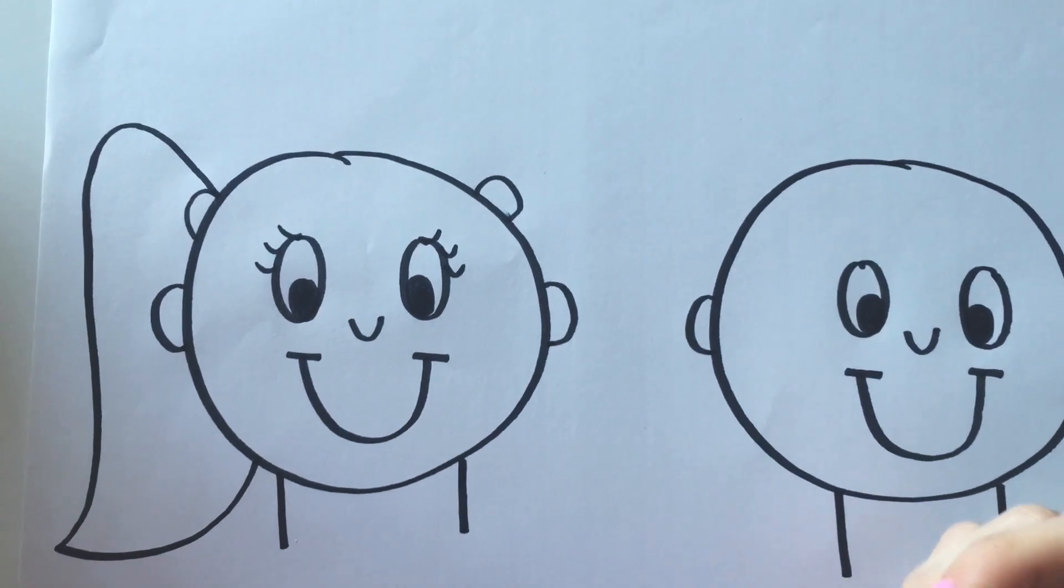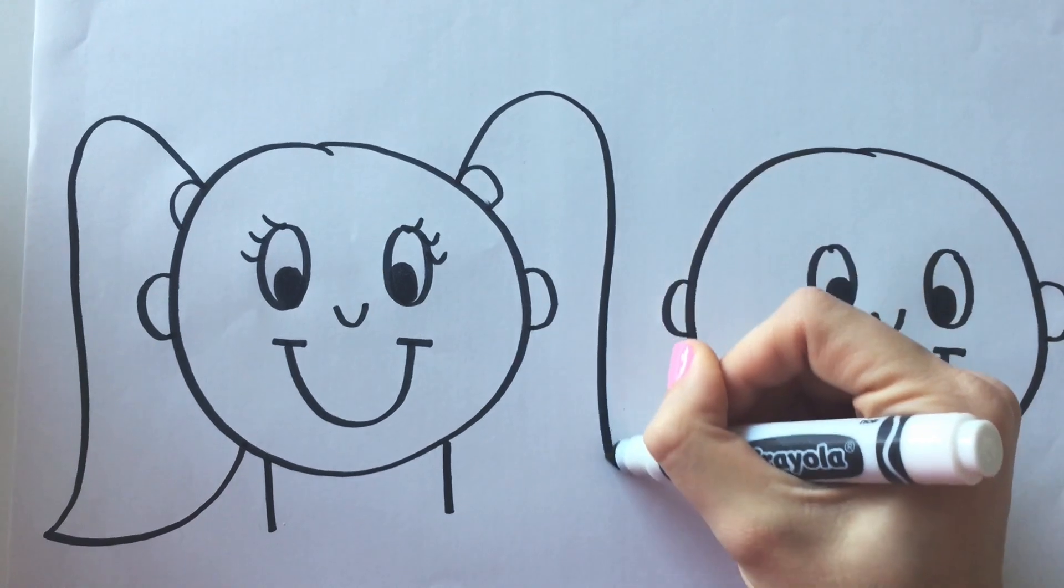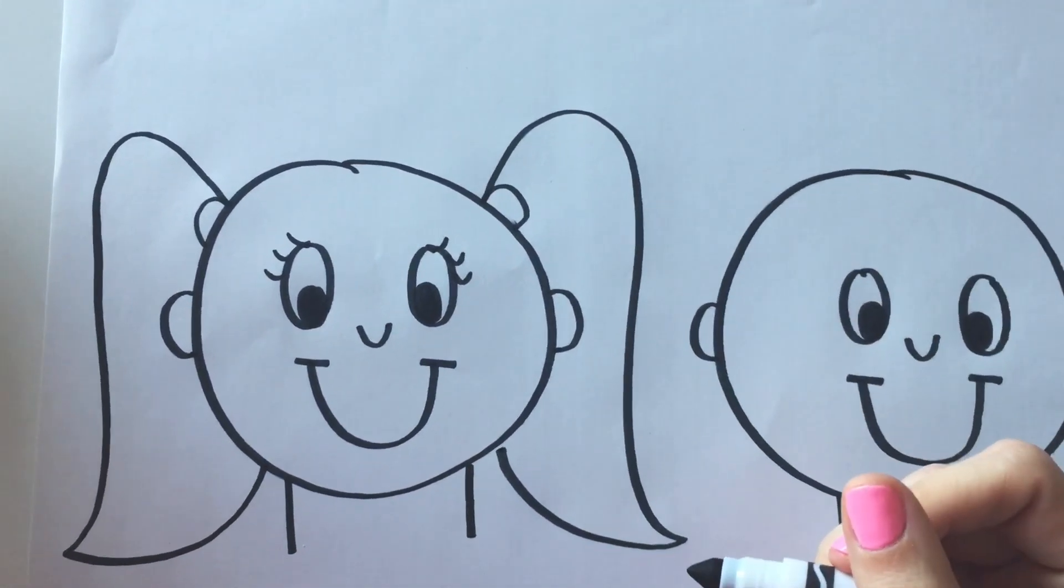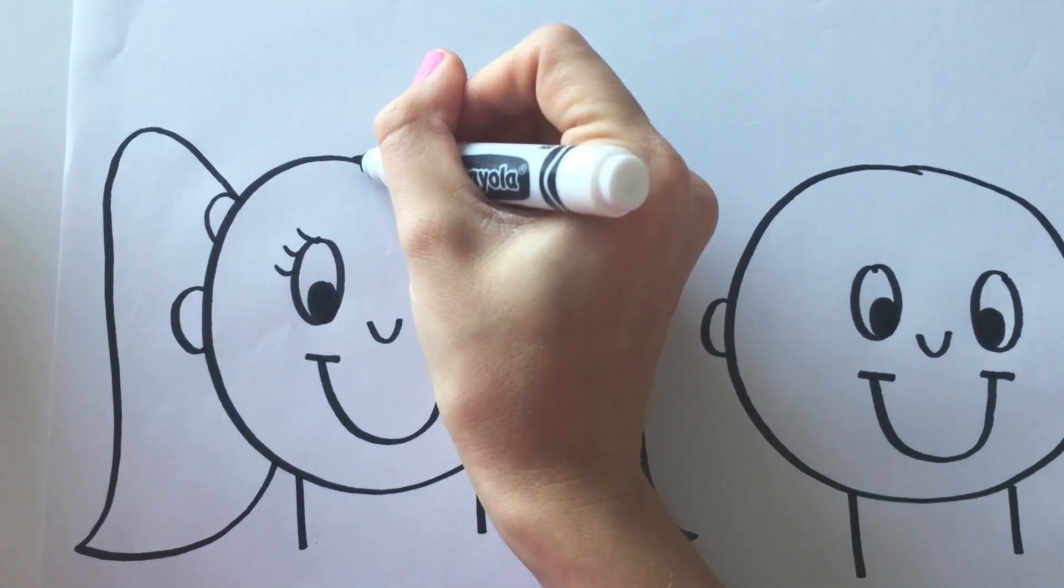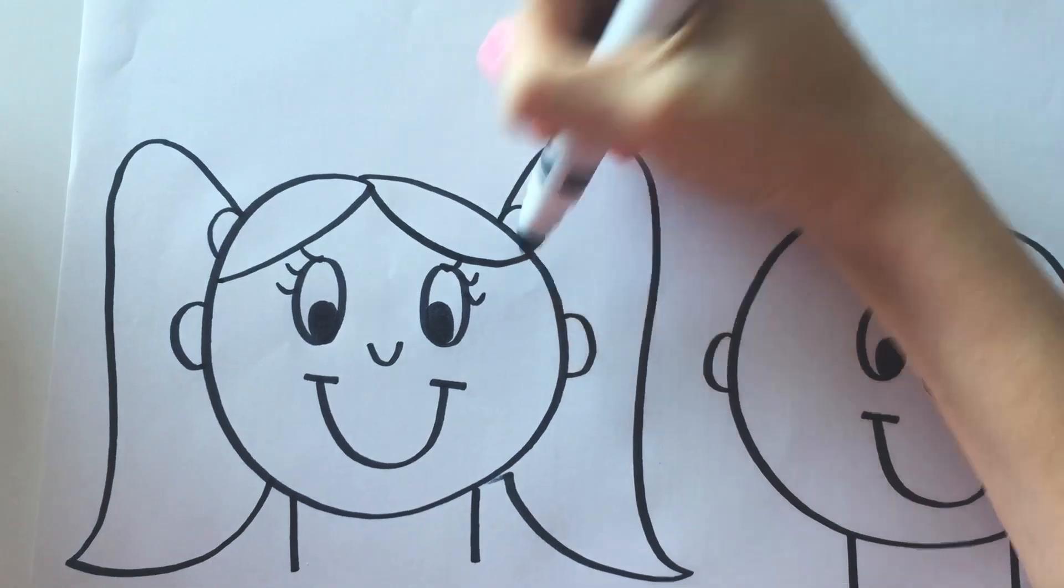Now let's do it again on the other side. We go up, down, out, and in. And to add some more hair, we go like this, there, and there.